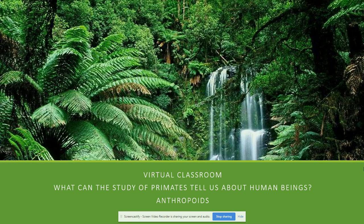Welcome back to the second part of this virtual classroom. Now we are going to talk about the anthropoids. For the purpose of the class, you only need to know the difference between the groups — for example, the difference between a prosimian and an anthropoid, or the difference between strepsirrhine and haplorhine. Just the basics; you don't need to know every single detail of all the species. So let's begin.